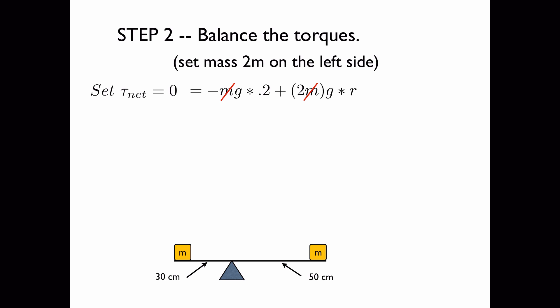We cancel out the masses and the g's and we get 0 is equal to negative 0.2 plus 2r, which implies that 0.2 is equal to 2r and after we divide both sides by 2 we get that r is equal to 0.1 meters or 10 cm.